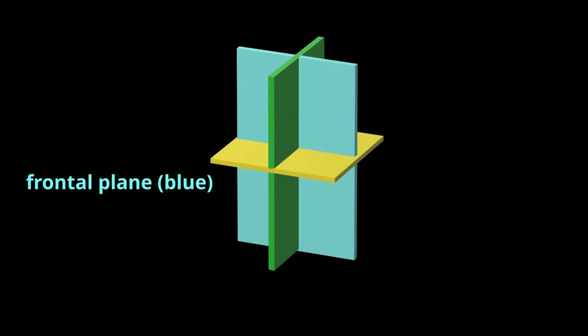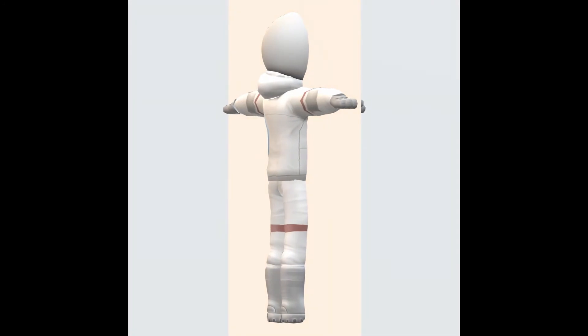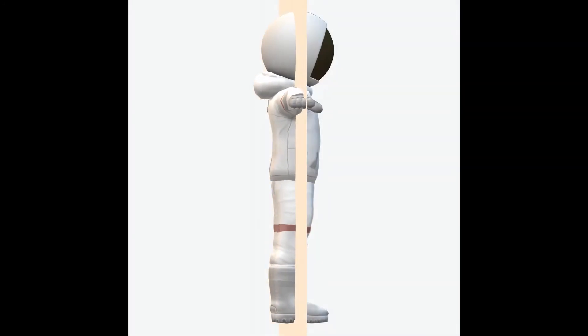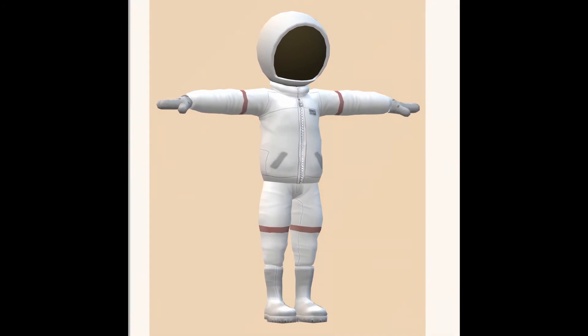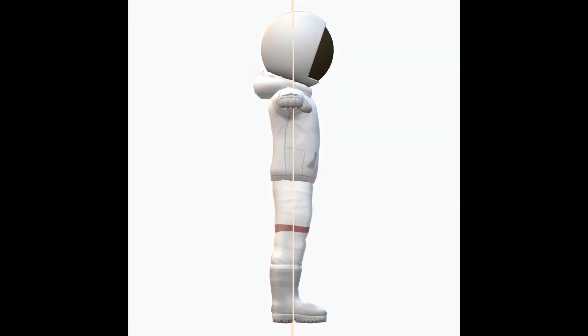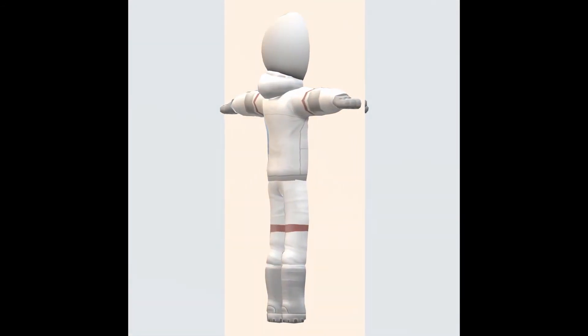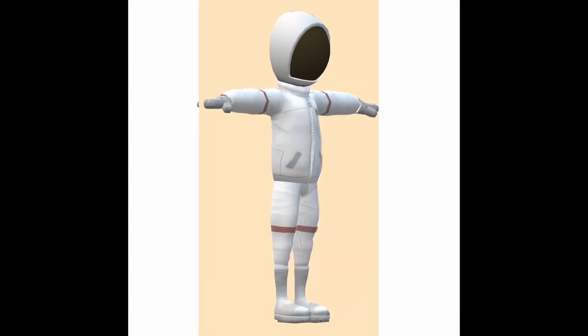Next up is the frontal plane, shown here in blue. The frontal plane divides the body into a front and back half, or an anterior portion and a posterior portion. Motion that occurs in this plane would be considered abduction and adduction.